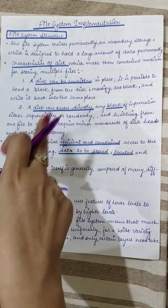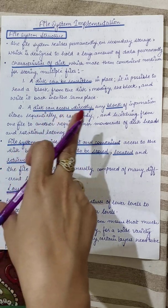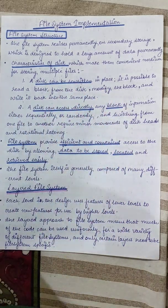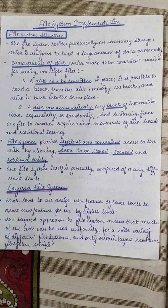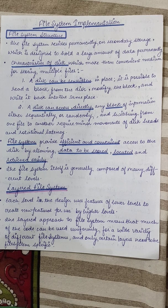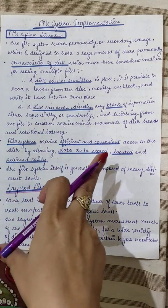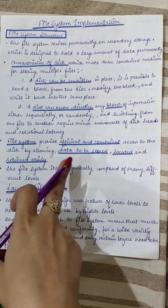A disk can be rewritten in place, so you can read block-by-block data, modify the block, and write it back. Second, a disk can directly access any block of information — you can access the magnetic disk in random order. Any block required by the user can be accessed, which is not possible with magnetic tape because that is a sequential access device.